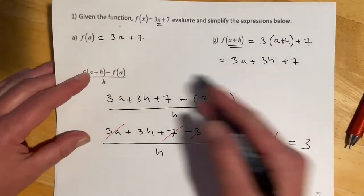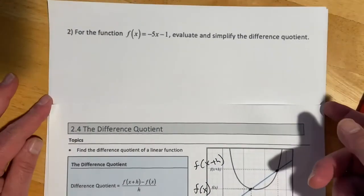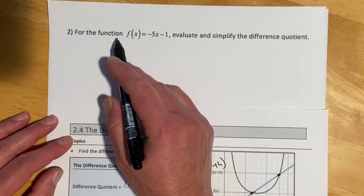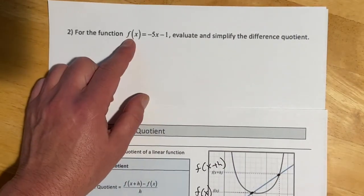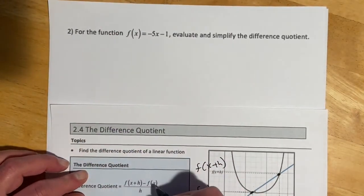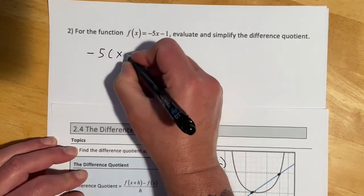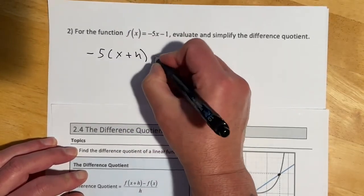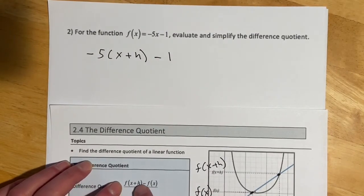One more example with just kind of straightaway setting up the difference quotient. Okay, so for this one, we're asked to, given this function, evaluate and simplify the difference quotient. So here's our difference quotient. So we're going to go, we want to find f of x plus h first. So that's going to be negative 5 times x plus h minus 1. So that is f of x plus h.